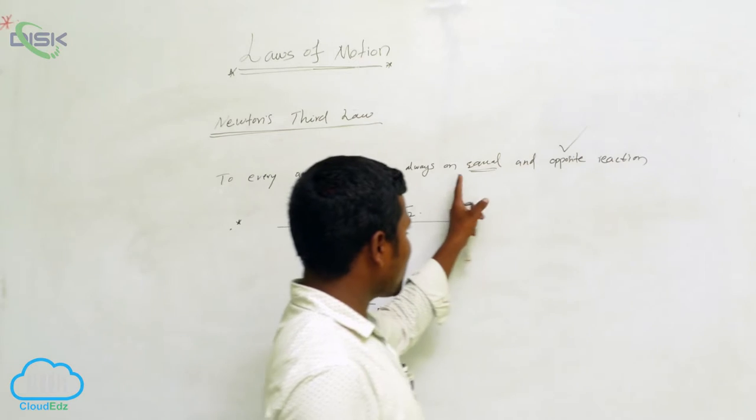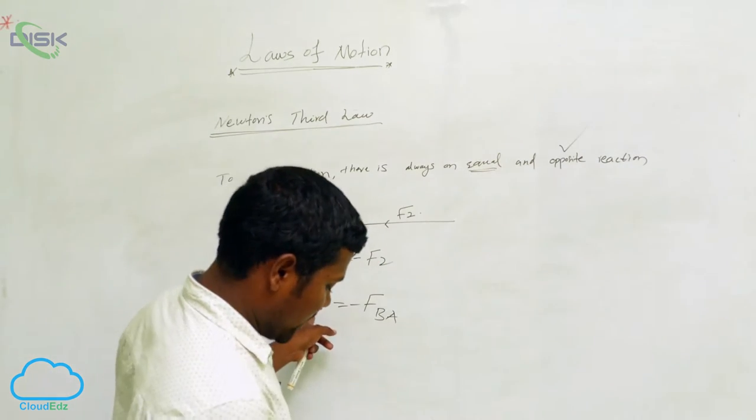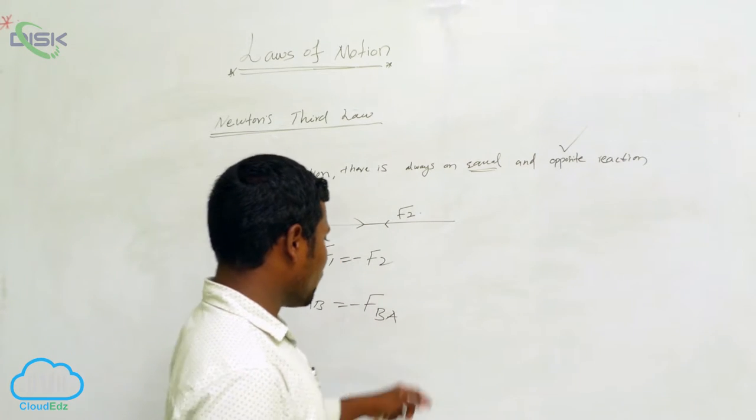Every action, there is always an equal and opposite reaction. FAB is equal to minus FBA.